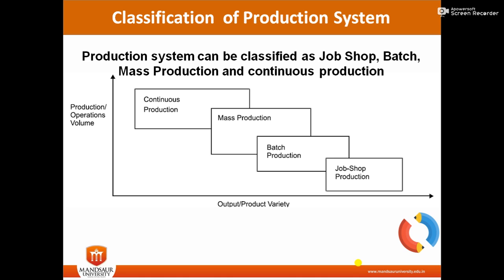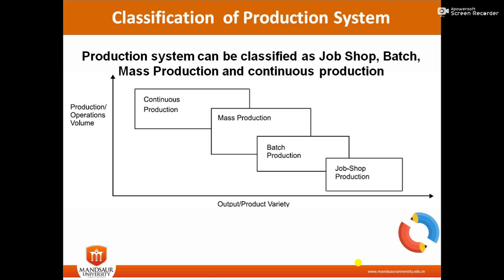In this diagram, we can understand on the x-axis there is a variety of product, and on the y-axis there is a volume of production. The first category is job shop production, where variety is more focused rather than volume. The second is batch production, where both variety and volume are somewhat focused. Similarly, mass production focuses on volume, and the last one is continuous production where volume is the only focus rather than variety.